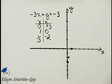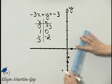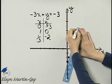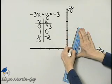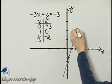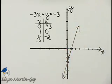And can you see that, indeed, these all three do lie along the same straight line? The line through these points is the graph of our linear equation in two variables.